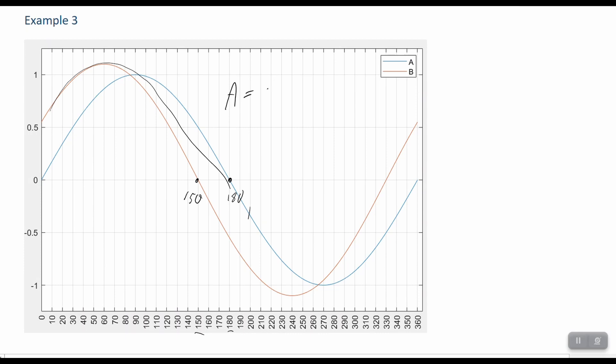So A is sine 2 pi f t, and B, again, 1.1 sine 2 pi f t, and it's leading by 30 degrees. So we can indicate it that way. But that really should be in radians to make that a proper equation for figuring out the sinusoid. And that is pi over 6.